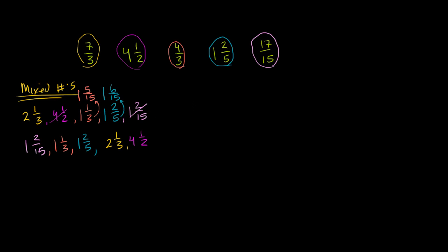We can rewrite the final order in the way the numbers were originally written. The smallest was 1 and 2/15, originally written as 17/15. Next is 1 and 1/3, originally written as 4/3. Then 1 and 2/5, which was already written as 1 and 2/5. Then 2 and 1/3, which was written as 7/3. And the largest, 4 and 1/2, was already 4 and 1/2.